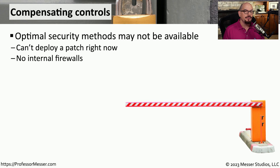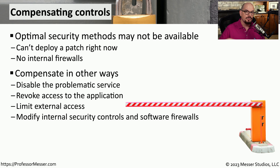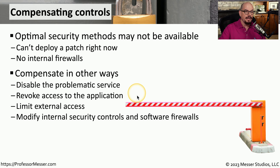There may be times when you're not able to patch a system — perhaps the patch is causing problems with other software, or the patch itself is one that you're not able to deploy at this time. And if you don't have any type of firewalls internally, you'll need some other way to prevent this device from being attacked. Some of those ways might be to disable the service that has the vulnerability. This would certainly prevent anyone from exploiting the vulnerability, but it also causes that service to be unavailable. Similarly, we could revoke access for everybody to use that application, which would stop an attacker but also prevents all users from gaining access.